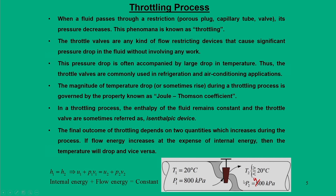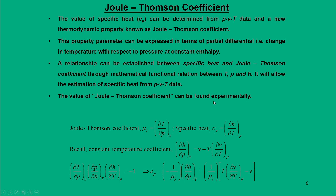For example, consider inlet conditions of 800 kPa and 20°C with a pressure drop to 400 kPa. There is a drop in pressure, but whether temperature increases, remains the same, or drops is still uncertain. Under what circumstances the temperature will increase, decrease, or remain constant depends on the parameter we call the Joule-Thomson coefficient, which will be the focus of today's lecture.